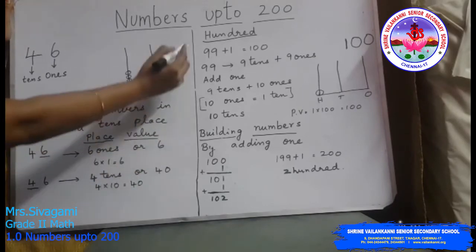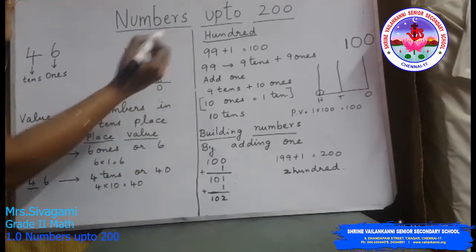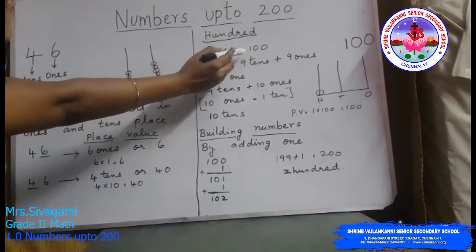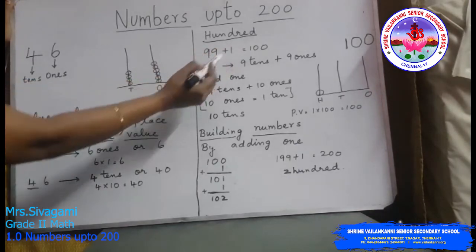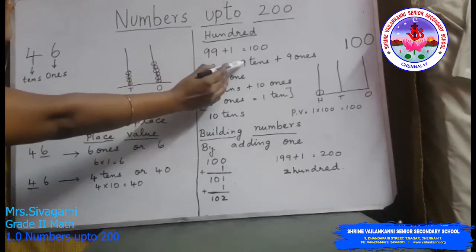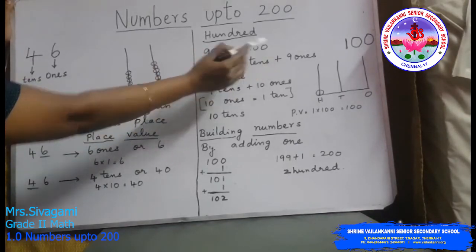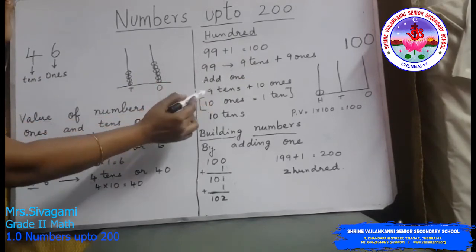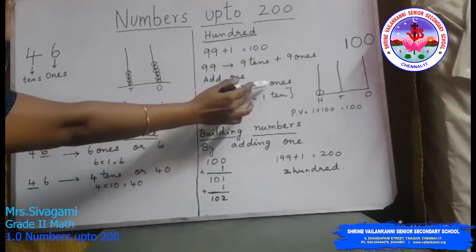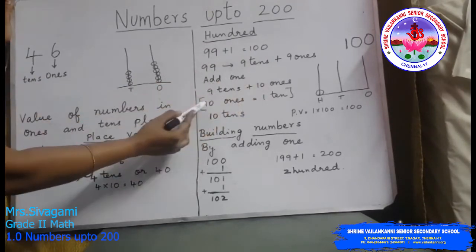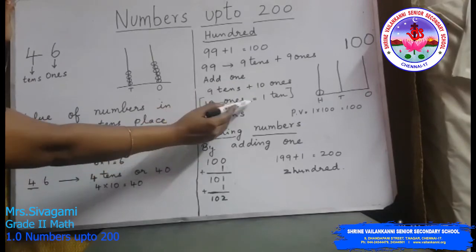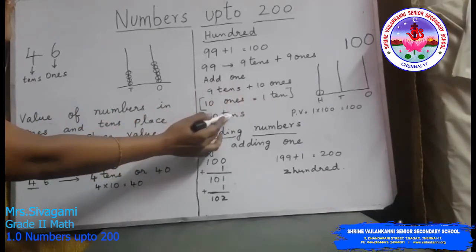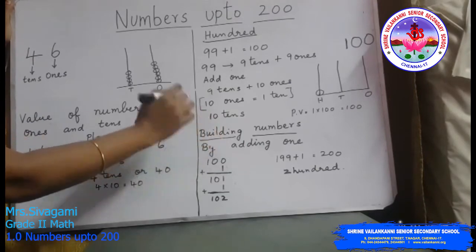Now let us see number 100. 99 plus 1 gives you 100. 99 is 9 tens plus 9 ones. You just have to add 1 to that — you get 9 tens plus 10 ones. You already know that 10 ones is 1 ten. So 10 tens make 100.